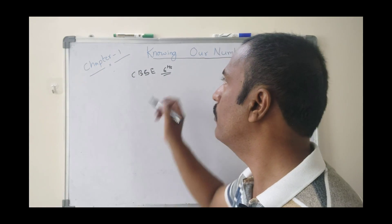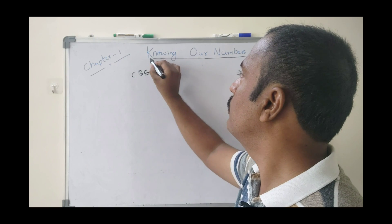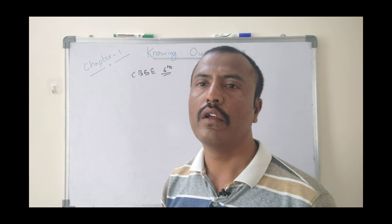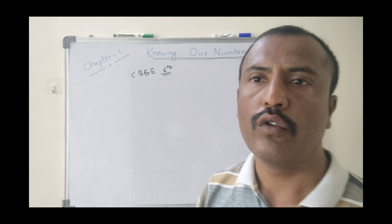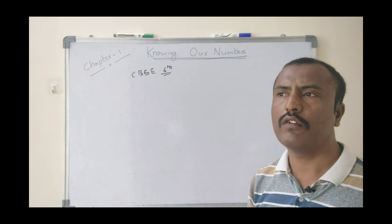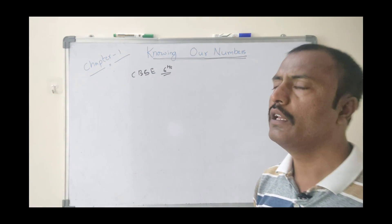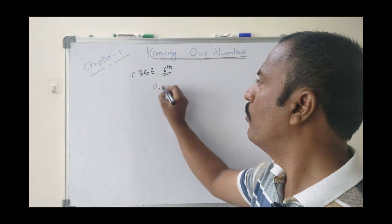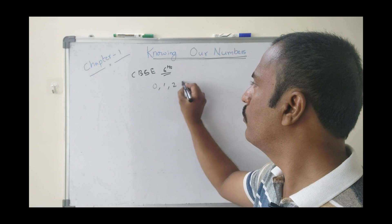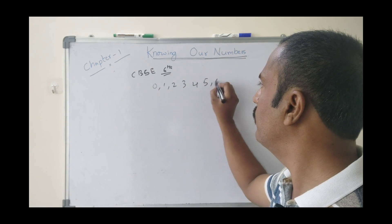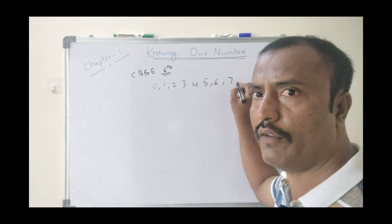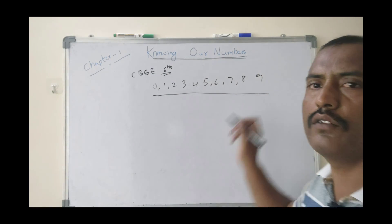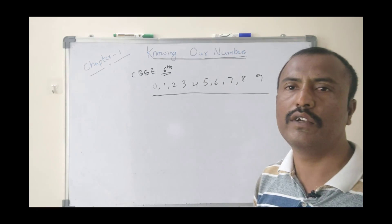Chapter 1 is 'Knowing Our Numbers.' In general, we have digits: 0, 1, 2, 3, 4, 5, 6, 7, 8, 9. We can call these as digits.